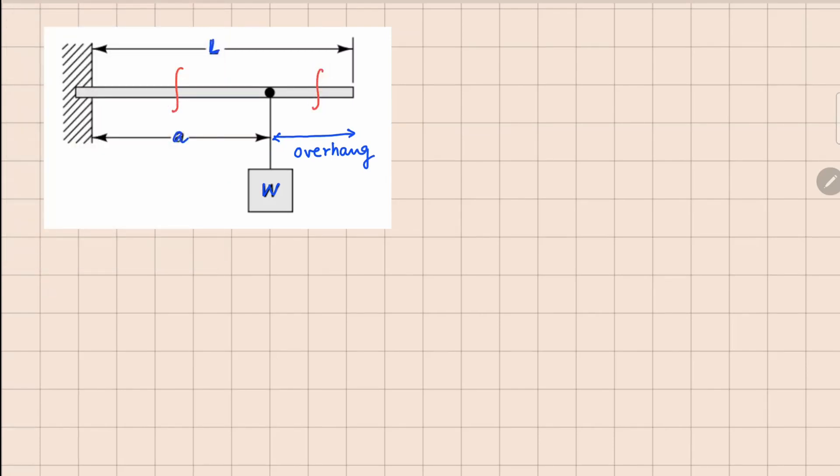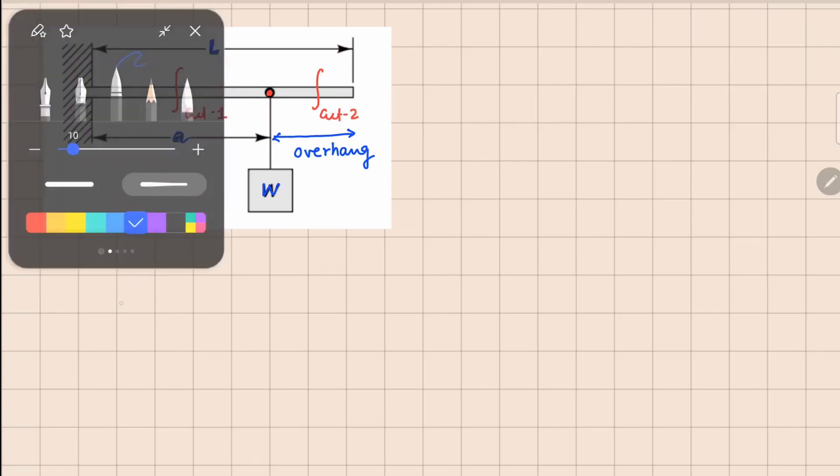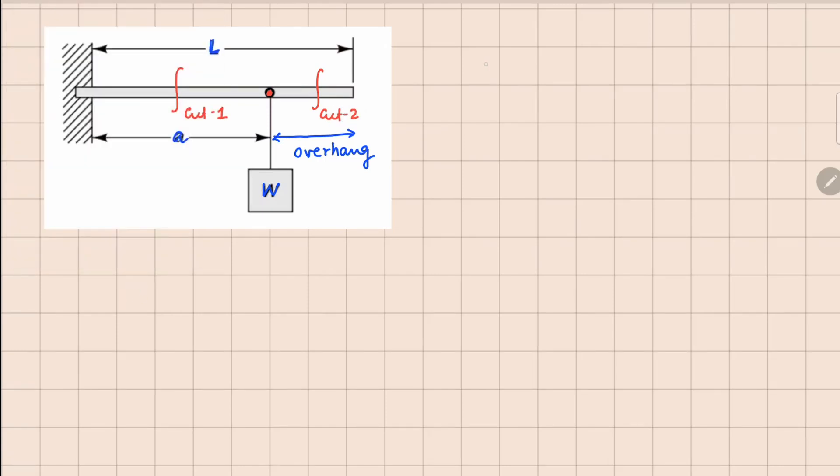For this beam we require two cuts here because walking from the left hand side there is a change in force that happens at this point. So this is your cut number one and this is your cut number two here. Let's draw the free body diagram for cut one. For cut one the left part is going to be with your shear force going up this way, your bending moment coming here, and on this side there will be reactions coming from your support.